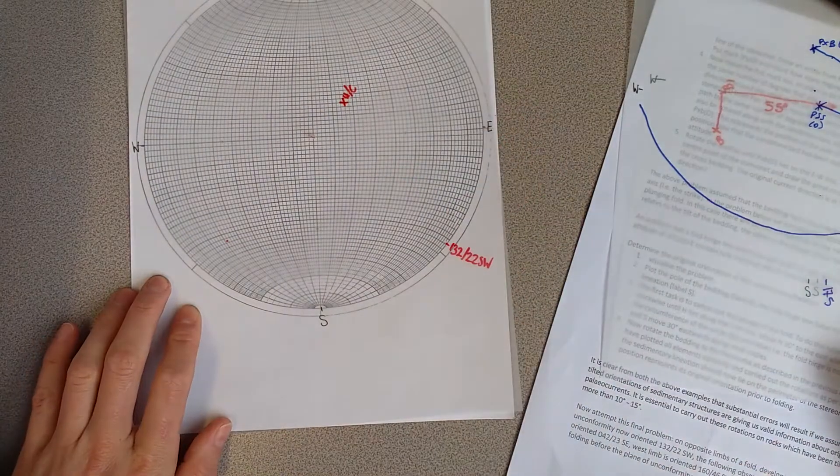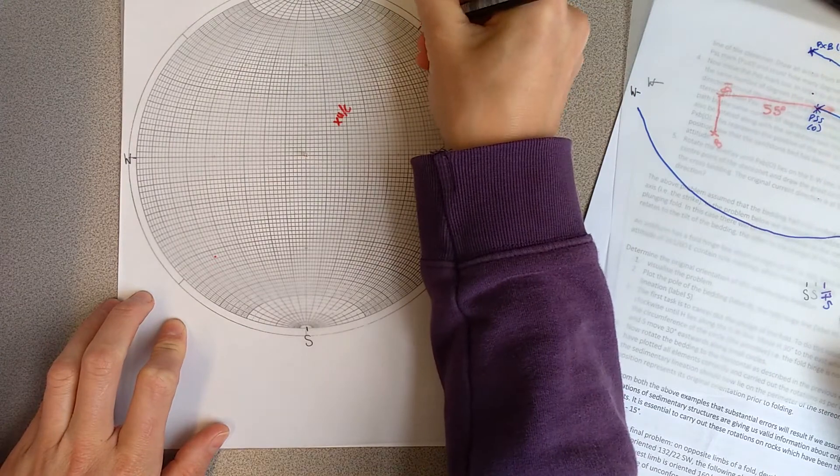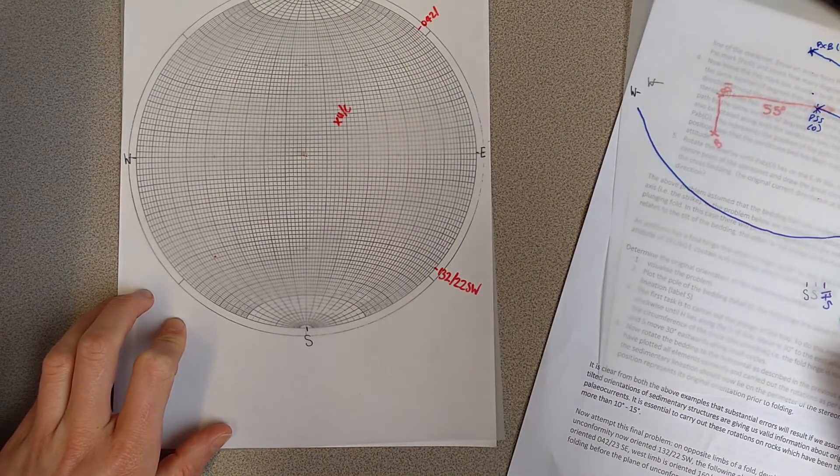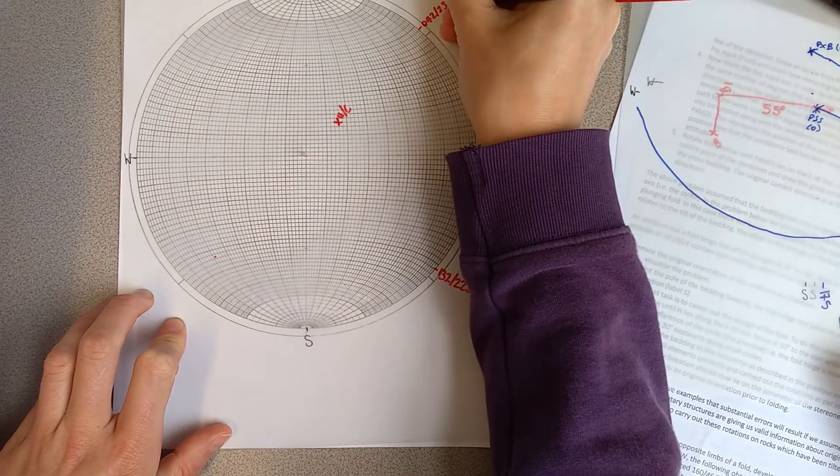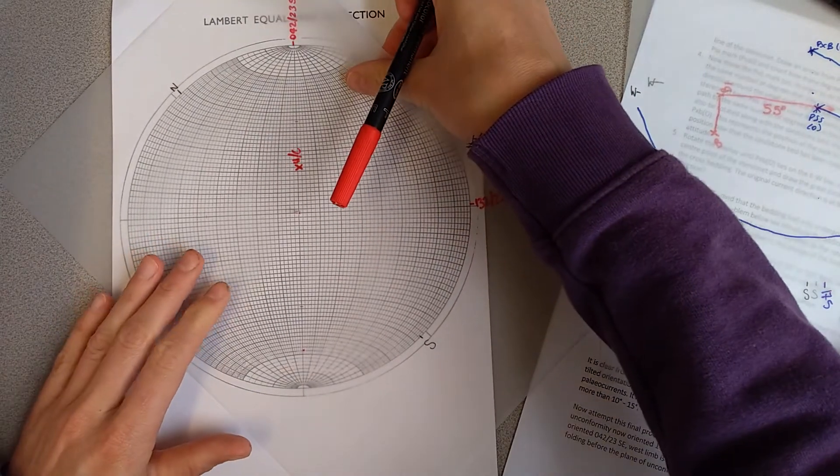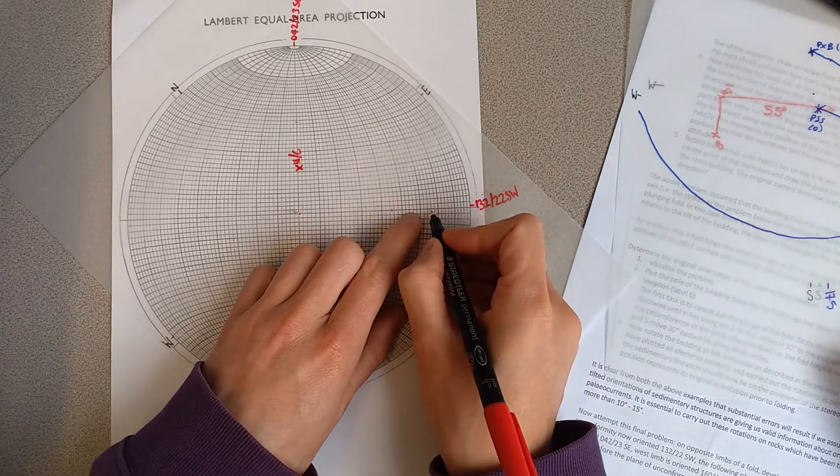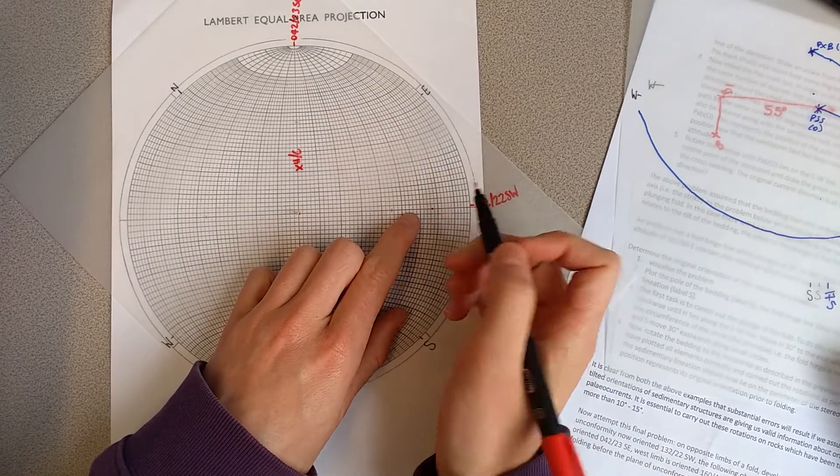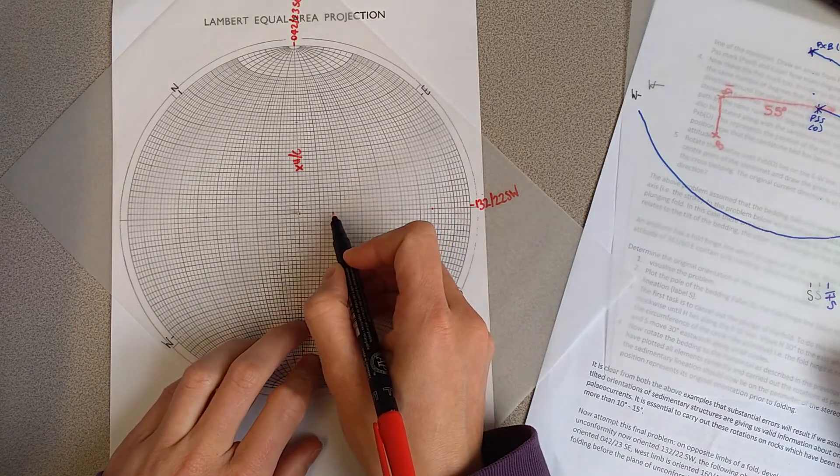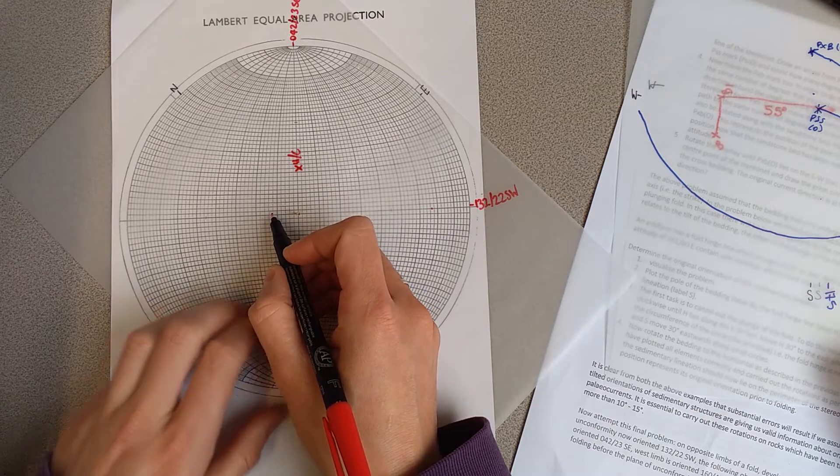Now I'm going to plot the pole of the east limb, which is 42, 23 southeast. Rotate the overlay up here. We're going to look at the southeast side. Count 23, then 90 more: 10, 20, 30, 40, 50, 60, 70, 80, 90. This is our east limb.